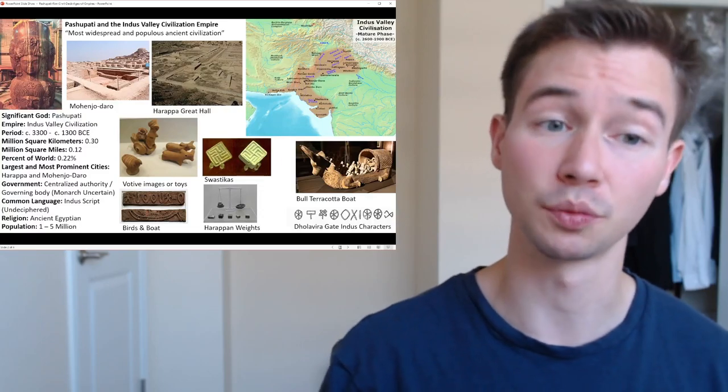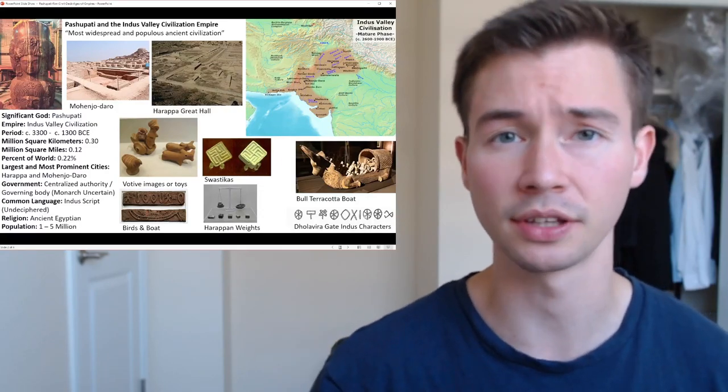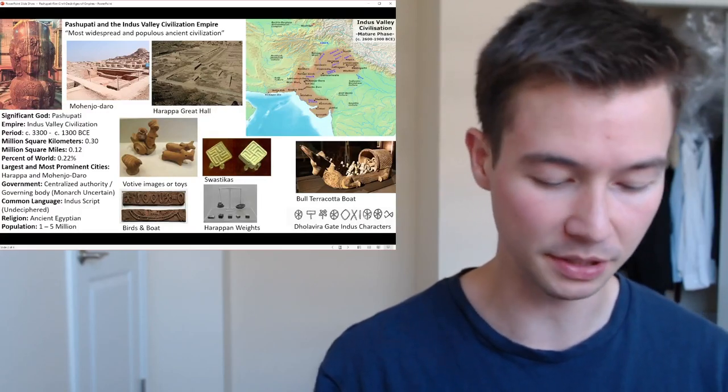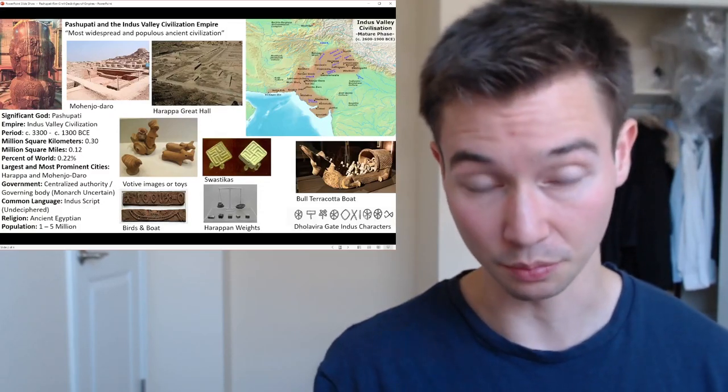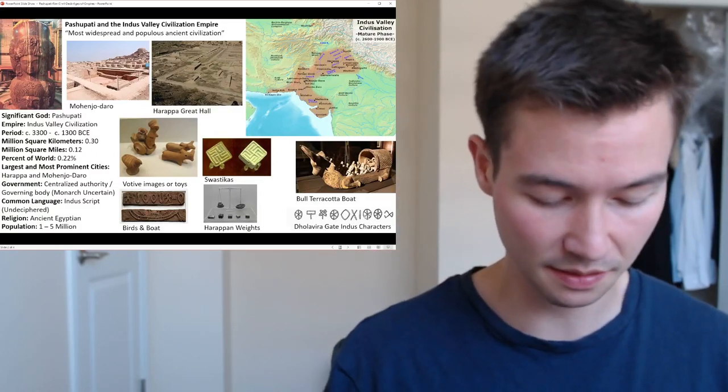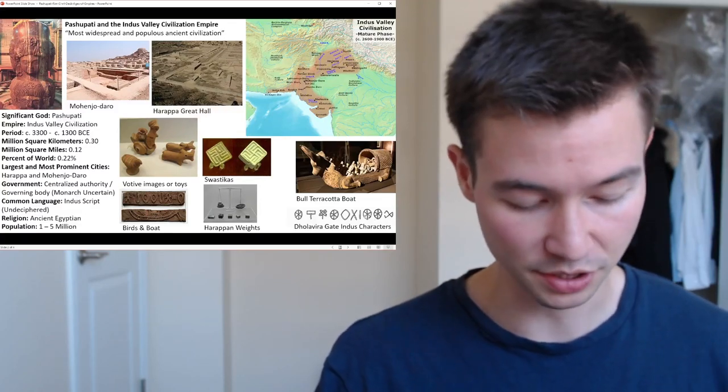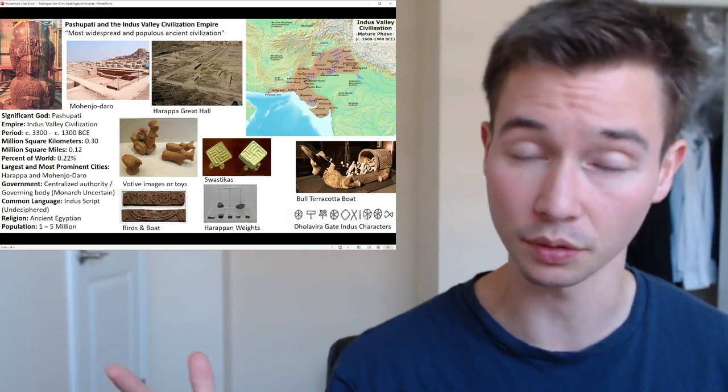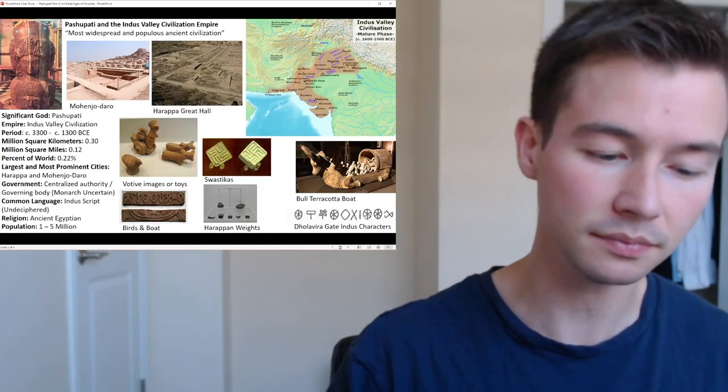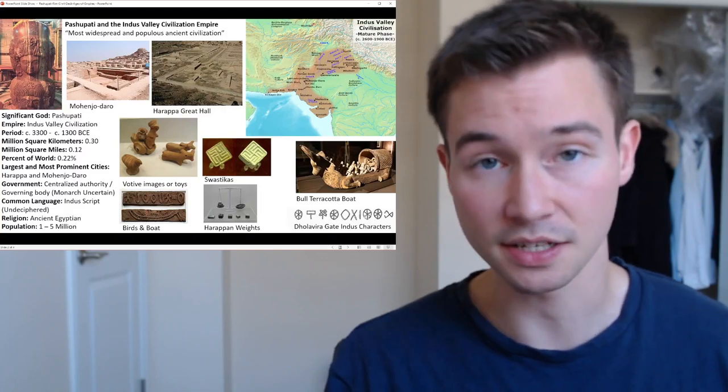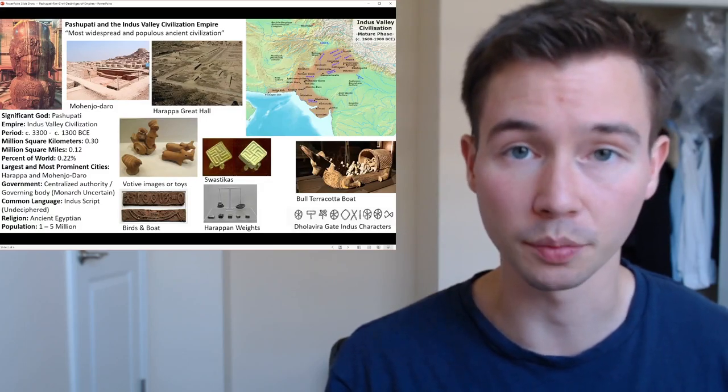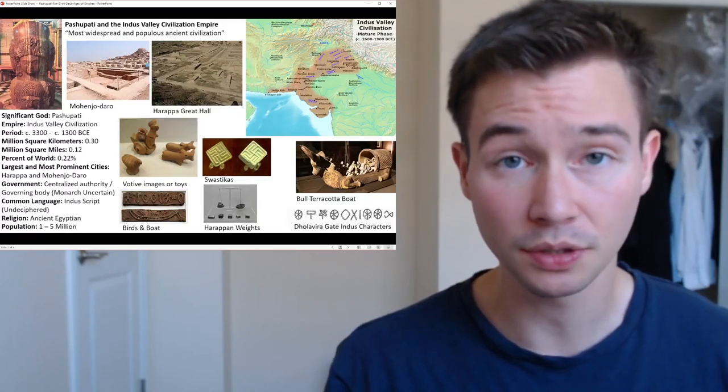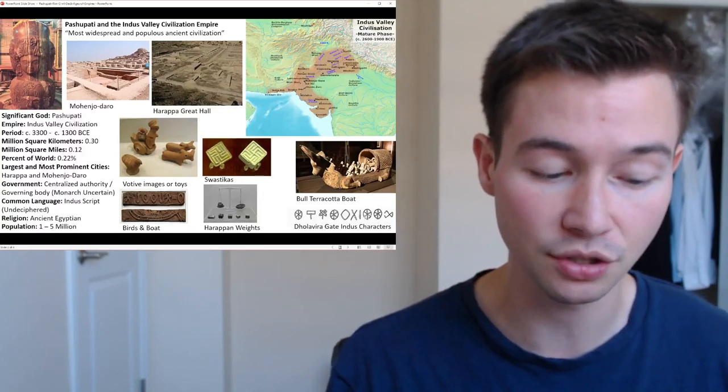The swastika existed in some of these relics here, and that's where the Nazis ultimately took the swastika from. Moving to late period and abandonment, from 1700 BCE to 1300 BCE. Around 1300 BCE, the last phase of the Indus Valley civilization witnessed the eventual abandonment of the major urban centers. The reasons for this final collapse remain the subject of scholarly debate.